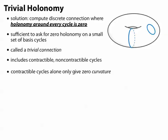then we're not getting something with zero holonomy, we're just getting something with zero curvature, and this really isn't going to be enough to give us a consistent notion of parallel transport. In other words, we will end up with these jumps.